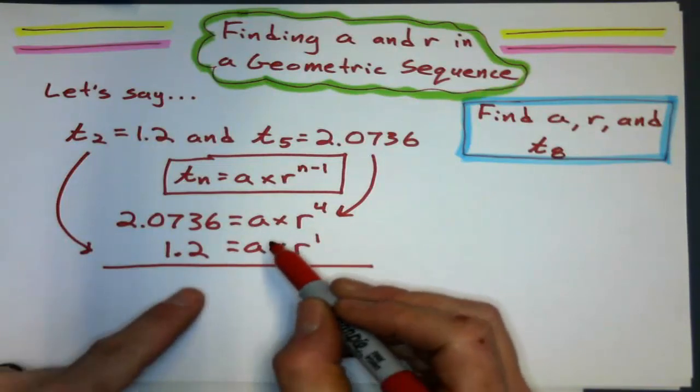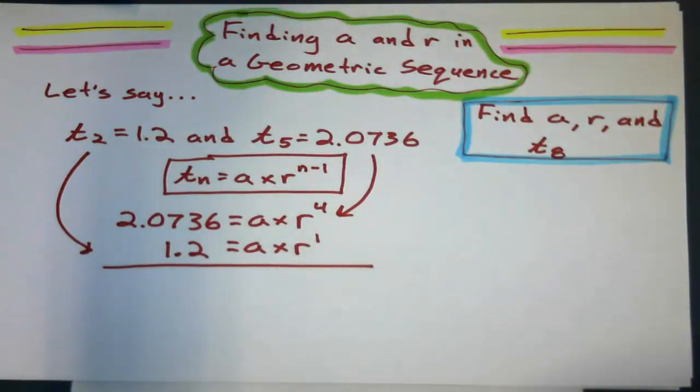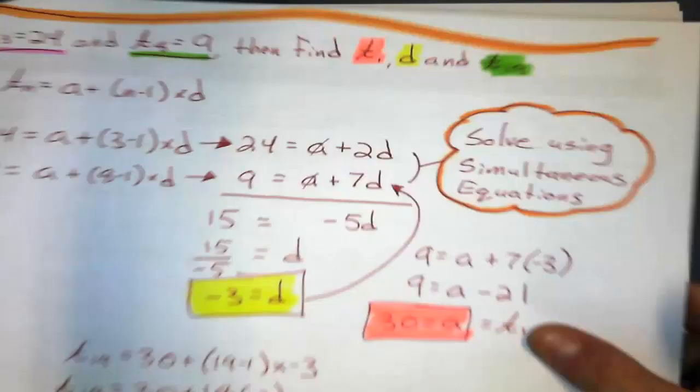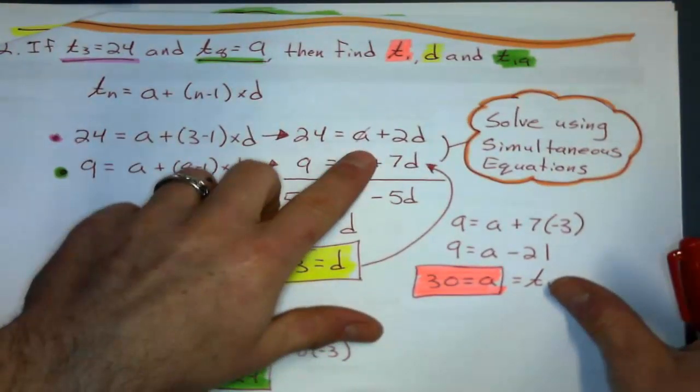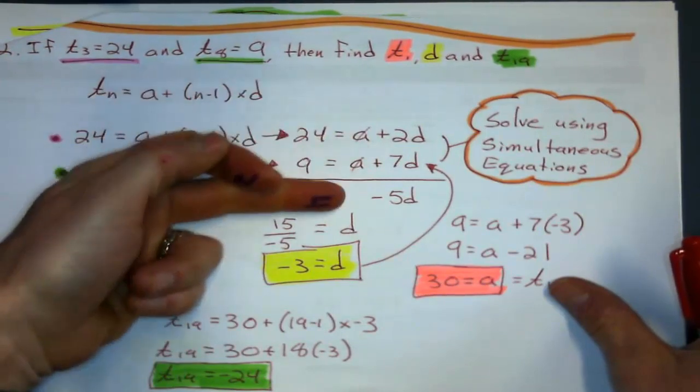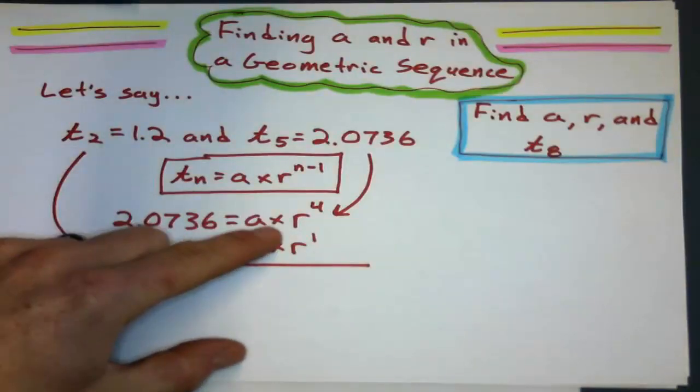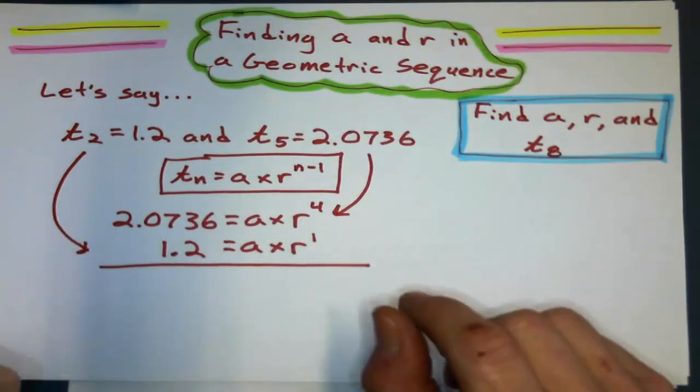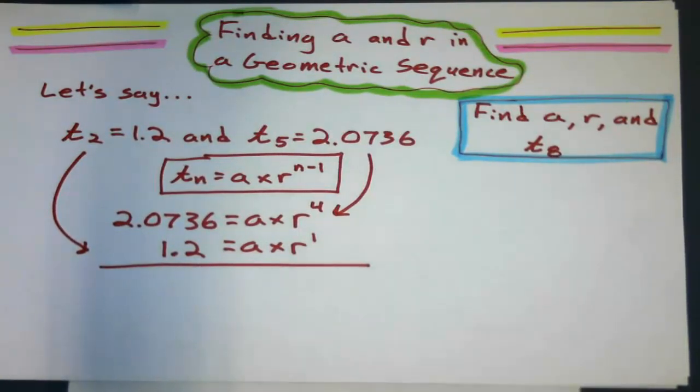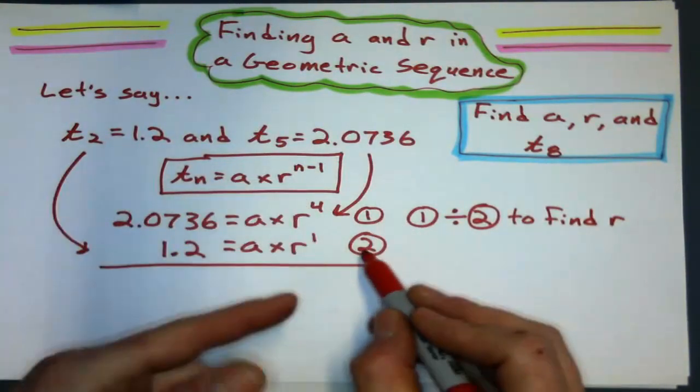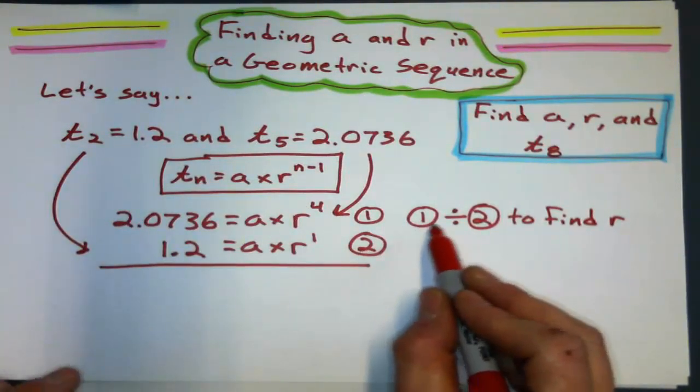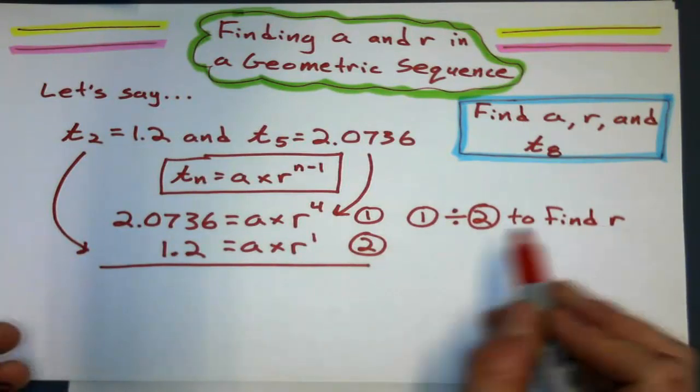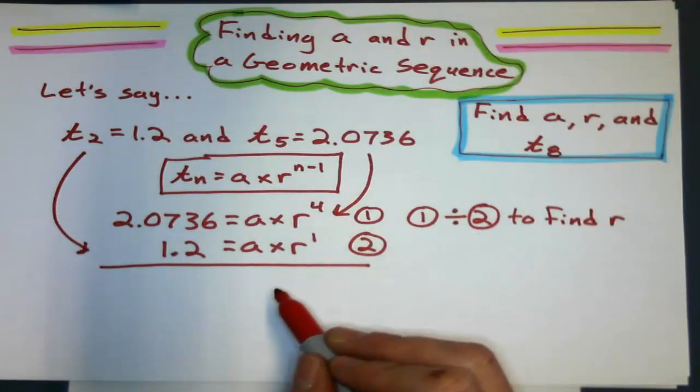But instead of subtracting the equations, like I do with arithmetic sequences, so arithmetic sequences we subtract the two equations. Here, I'm going to divide the two equations, because it's a common ratio, not a common difference. What I'm going to do is say, that's equation 1, that's equation 2. Equation 1 divided by equation 2 will help me to find the common ratio.